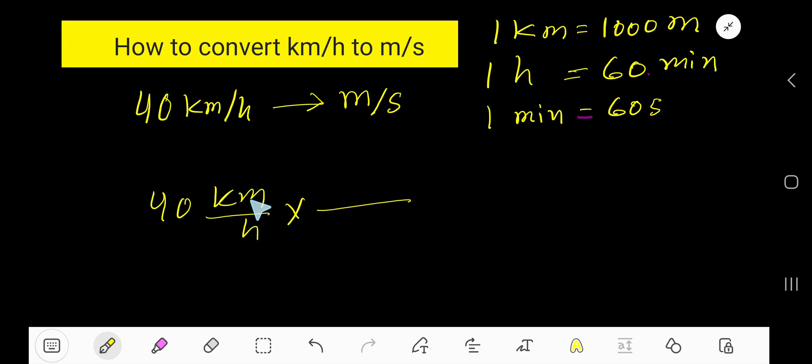So, let me convert kilometer to meter using this conversion equation. 1 kilometer equal to 1000 meter. To cancel kilometer, we will write kilometer at the bottom. And with kilometer, we have 1000 meter that will come at the top.